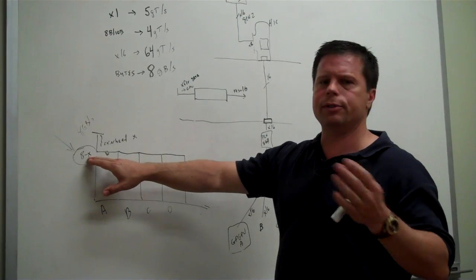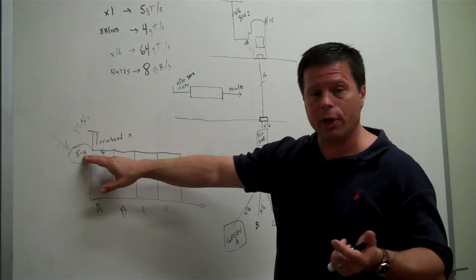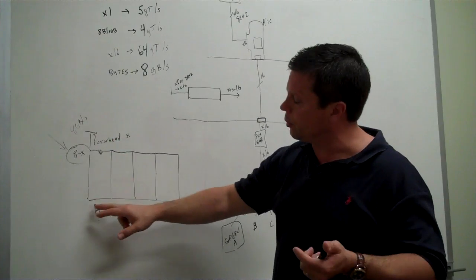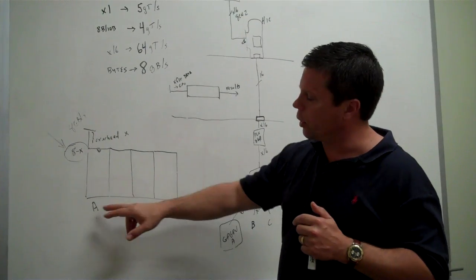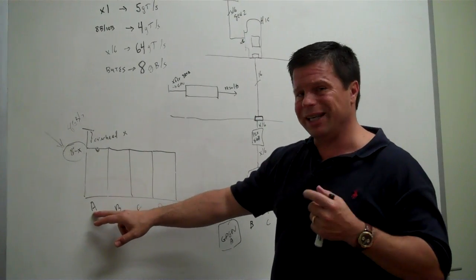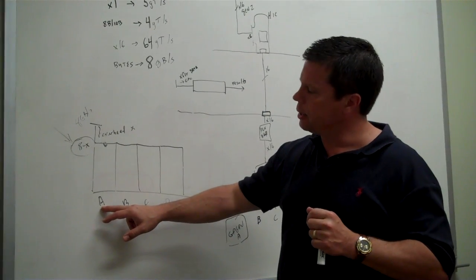you take this max bandwidth and you divide it by 4 because it's being shared across four devices. If the overhead was just, let's say, for the sake of argument, 0 and we were really talking about 8 gig, then it would be 8 divided by 4, or each device would see an average of 2 gigabytes per second.